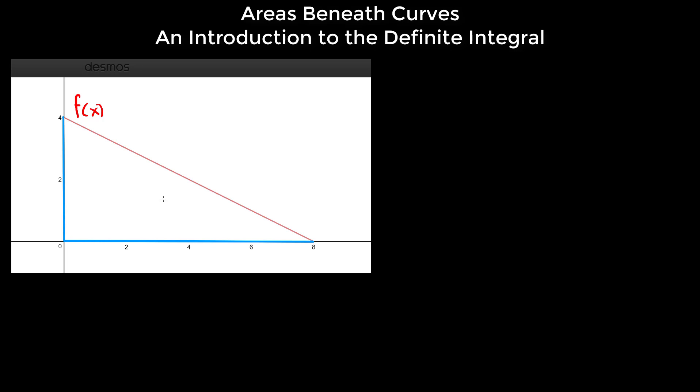And so now that we have this triangle, we can easily compute the area of a triangle by using our knowledge that the area is equal to one-half of the base times the height. And so our base, we notice it goes from zero to eight. So the difference between that is eight. And the difference between zero and four, well, that's just four.